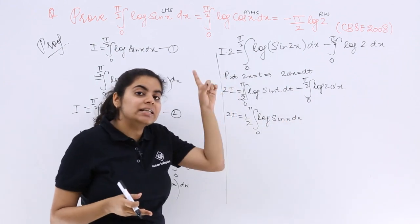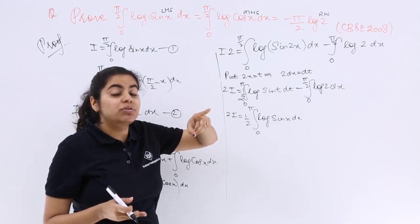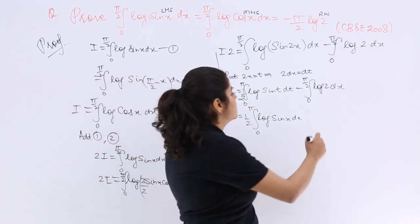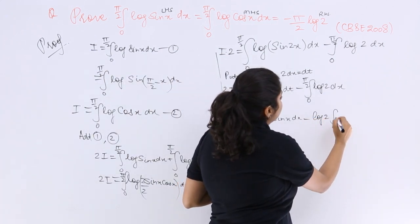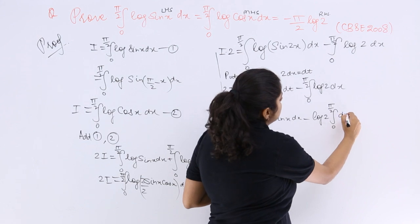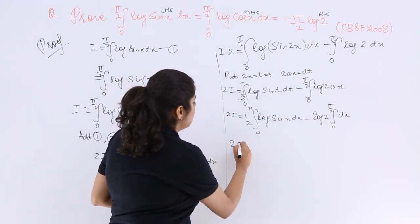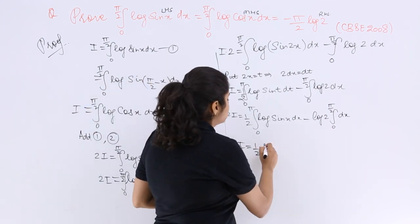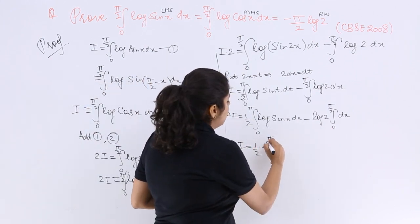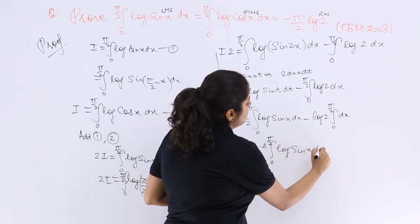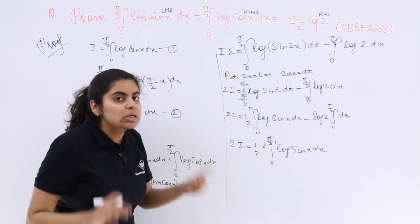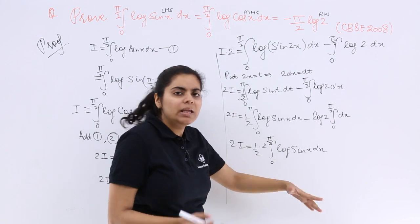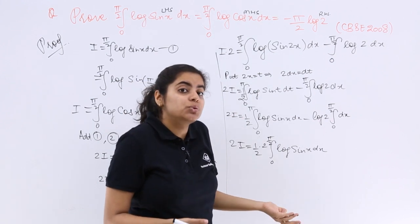If you remember, we had studied a property, 0 to a f(x) dx, first property is equal to 0 to a f(t) dt. So that means I can use like this, minus log 2 being a constant outside, 0 to π/2 dx. Now as you can see after this step, it is 2I is equal to 1/2. If I halve the limits, that will be beneficial. So 2 comes outside 0 to π/2, log sin x dx. Why I have done this? Because the question itself is I is equal to this limits and log sin x dx. So I have to obtain the question again so that I can substitute with I.